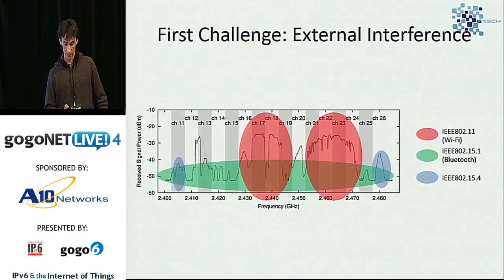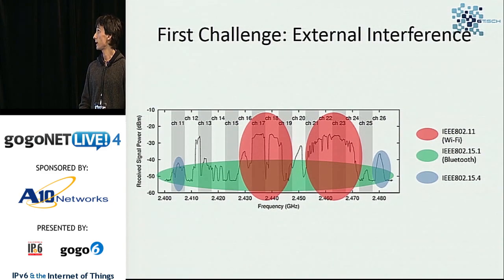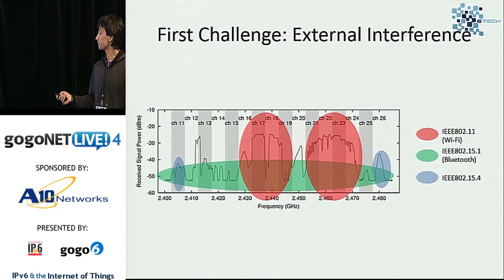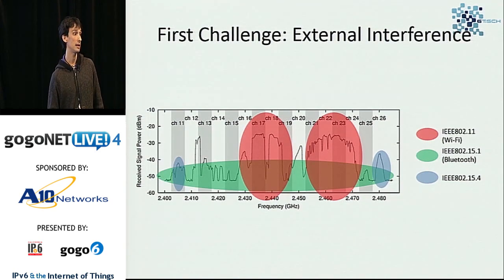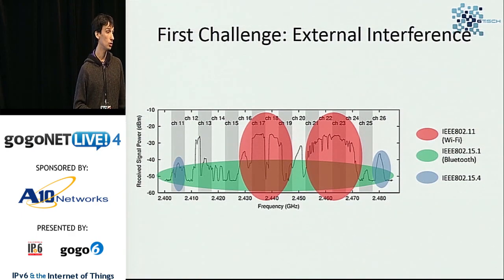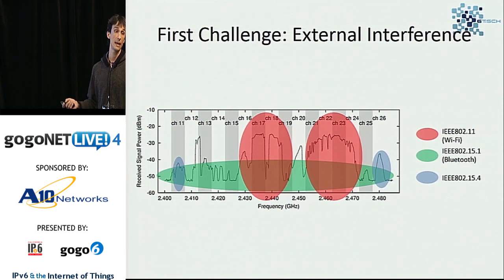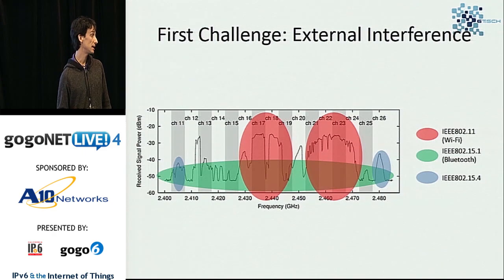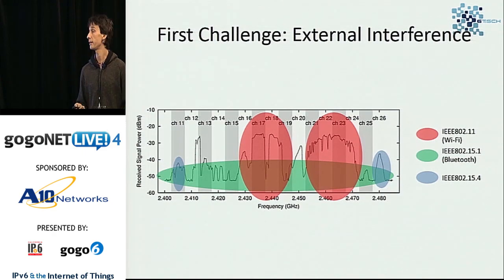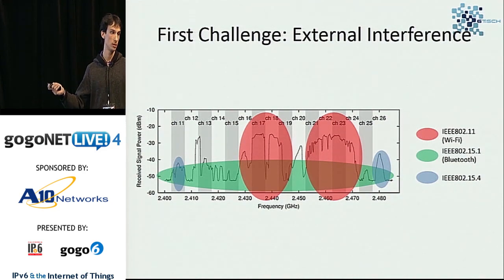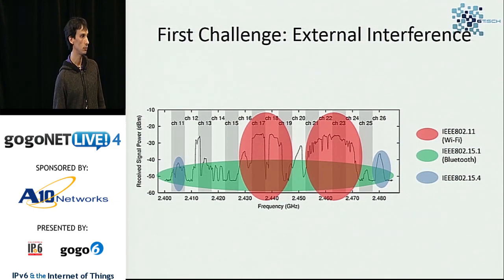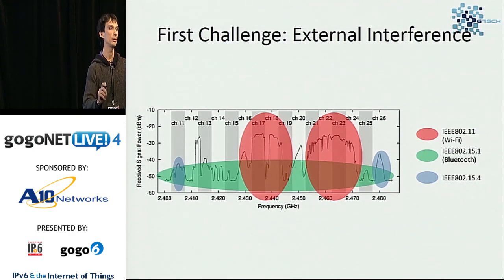The first thing I'll present is the wireless challenges. We need to understand the wireless medium and the problems it has, especially in industrial scenarios. The first challenge is external interference. Our constrained devices have low-power radios and narrow-band channels, so they are very prone to interference from other technologies. We are using ISM bands, which are open — any radio manufacturer can use those bands. In industrial scenarios, reliability is critical. We don't want to lose packets when, for instance, we need to stop a machine by pressing a button.